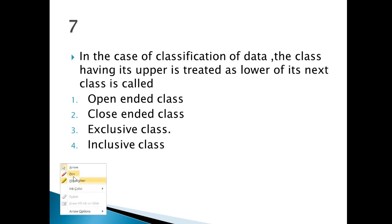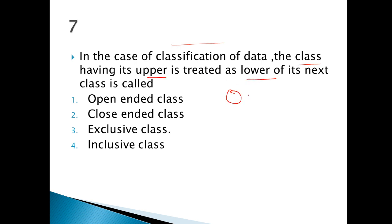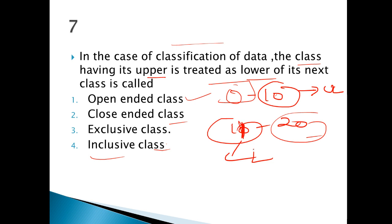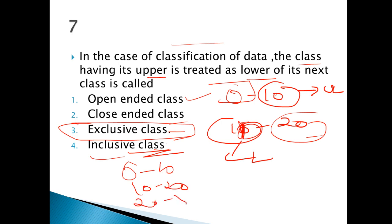In case of classification of data, the class having its upper limit treated as lower of next class — for example, 10 to 20, the upper is 20 and next class's lower is 20. This is the exclusive series. Inclusive would be like 20 to 30.